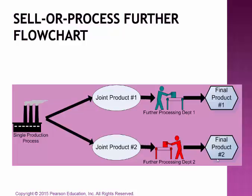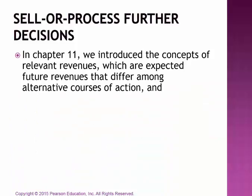Earlier in the textbook, this is covered in Chapter 11 regarding relevant revenues and relevant costs. You've also been introduced to this in your Principles of Accounting courses as well as your cost class. We would need to utilize the relevant costs and relevant revenues to make a decision. Relevant means that we would expect them to differ among the alternative courses of action — are the revenues different in Plan A and Plan B?